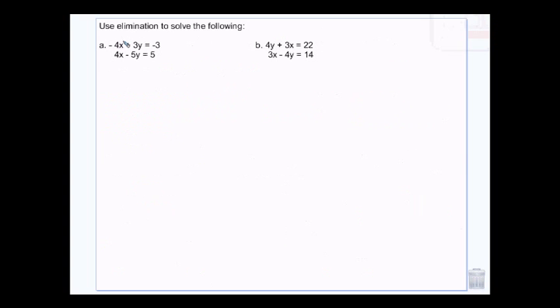The next thing we do is we check if we have a situation like this. I have a negative and a positive of the same number, then I add. So I can add these two together. Negative 4X plus 4X is no X's. 3Y plus negative 5Y gives me negative 2Y. Negative 3 plus 5 is 2. Negative 2Y equals 2.